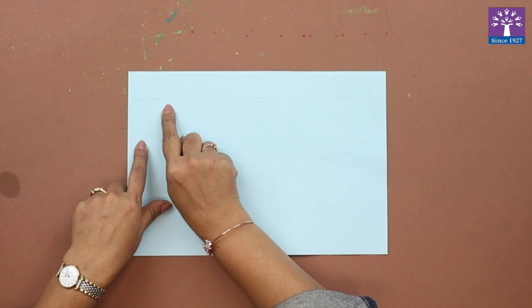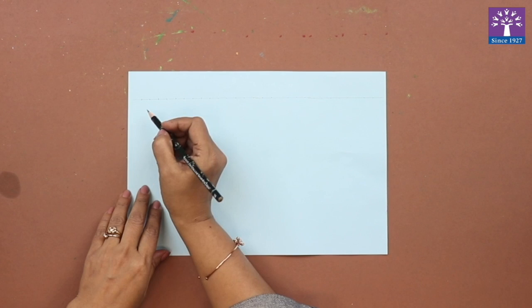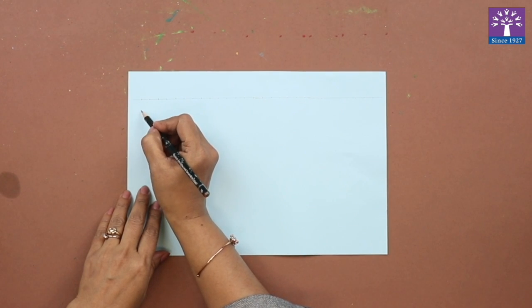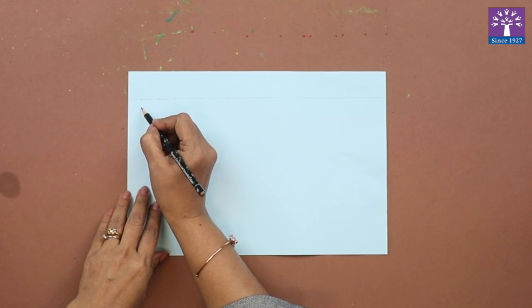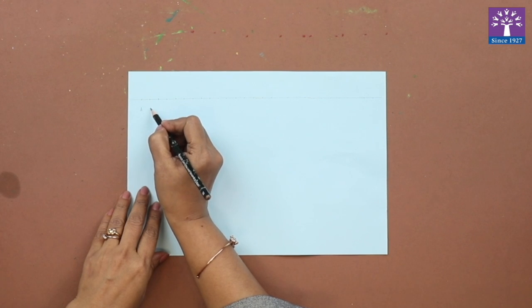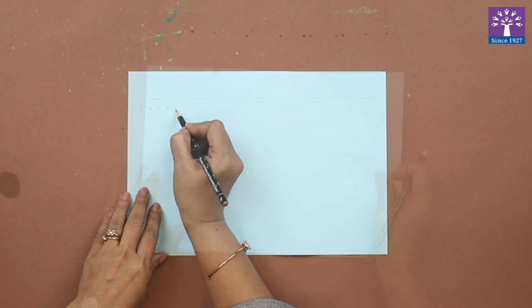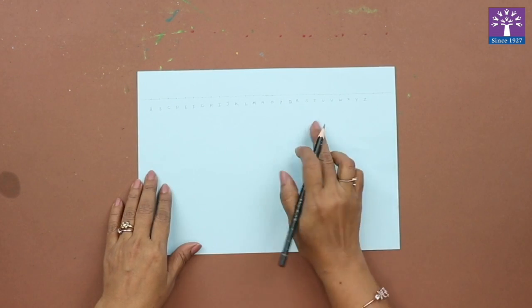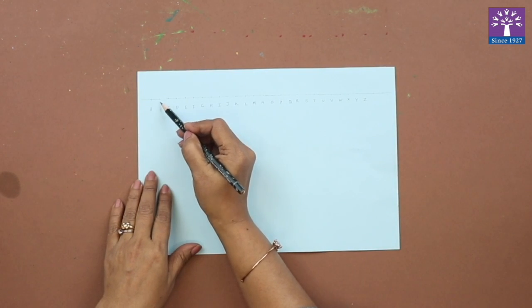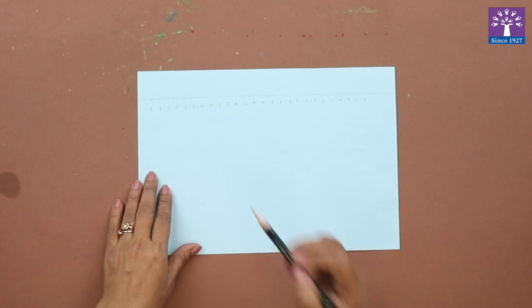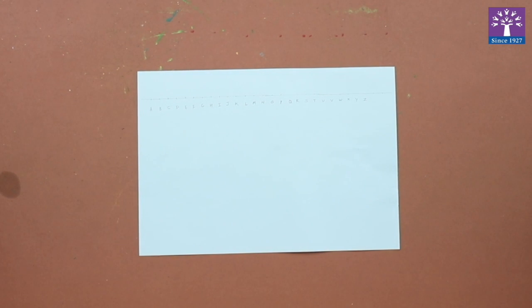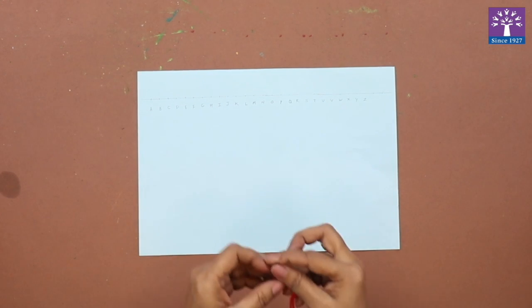We'll write alphabets for each dot. First dot is A, B, C, D, so we have named each dot. This will be useful for us to make the stitches.